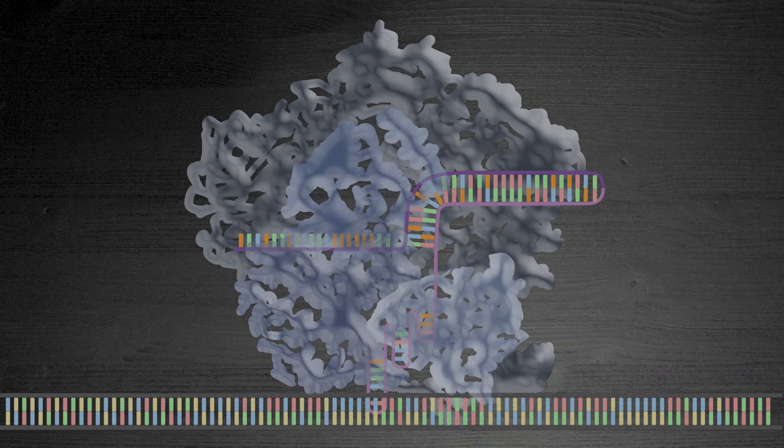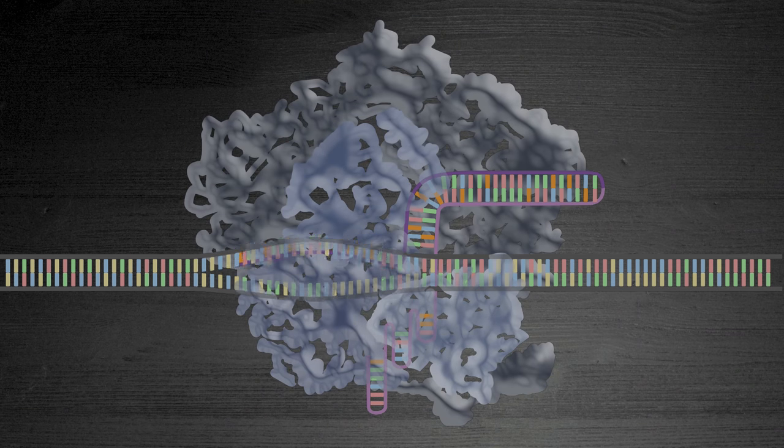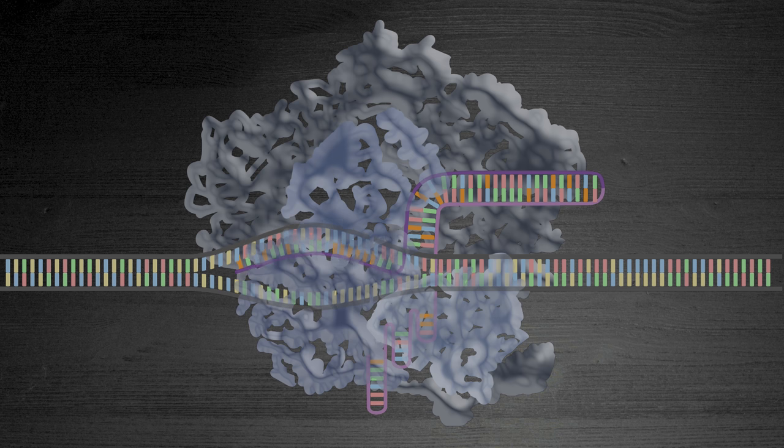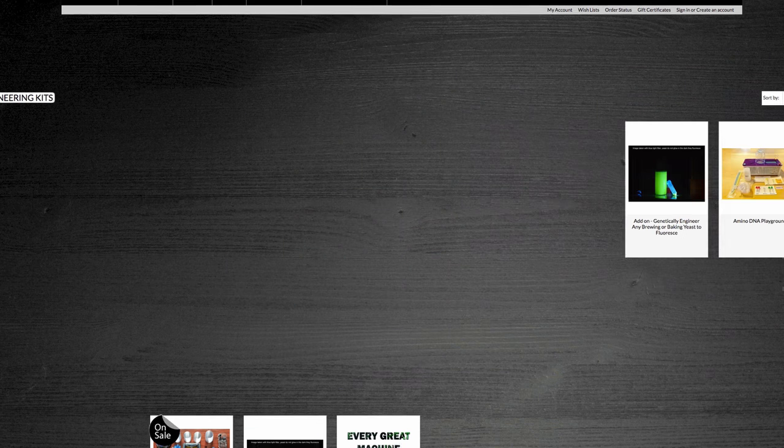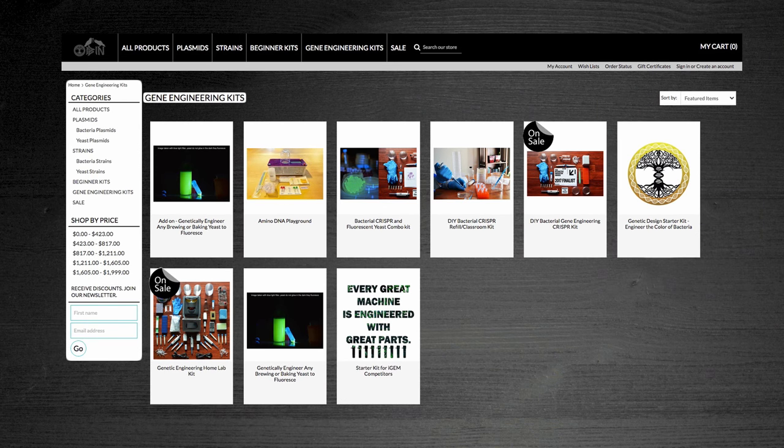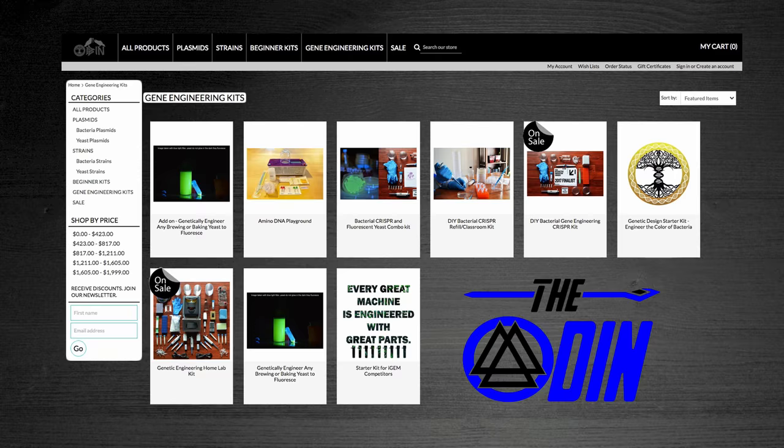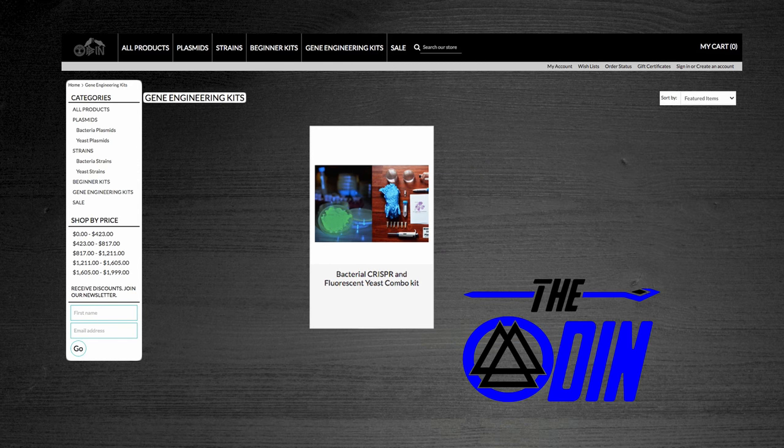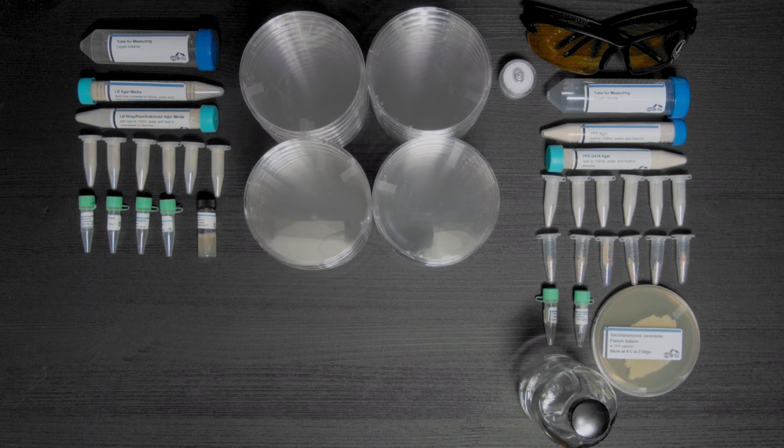CRISPR-Cas9, the relatively new kid on the genetic engineering block, has taken off in popularity among the non-scientific public. There are even kits you can buy for yourself and experiment with CRISPR and other more conventional genetic modification techniques. Sold by the company The Odin, the Bacterial CRISPR and Fluorescent Yeast combo kit is one such kit with everything you need to get started.